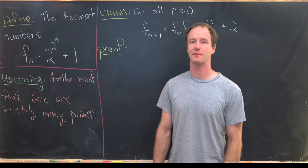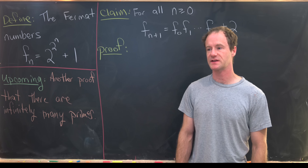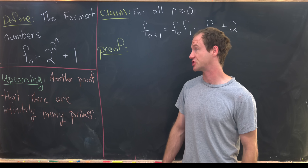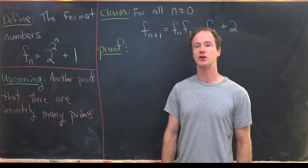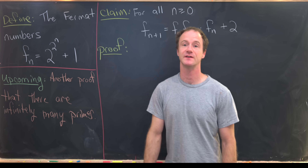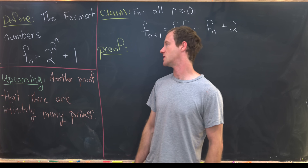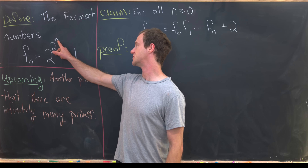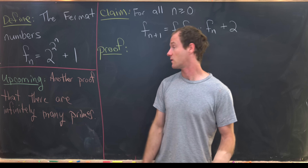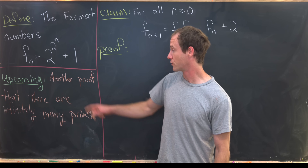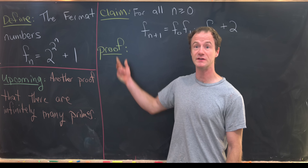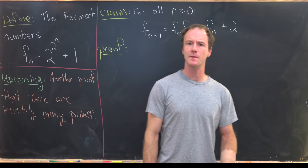We're looking at an example from a number theory class. It starts with the notion of a Fermat number, which we denote by F sub n — numbers of the form 2 to the 2 to the n, plus 1. It will end with a proof that there are infinitely many primes using these Fermat numbers.